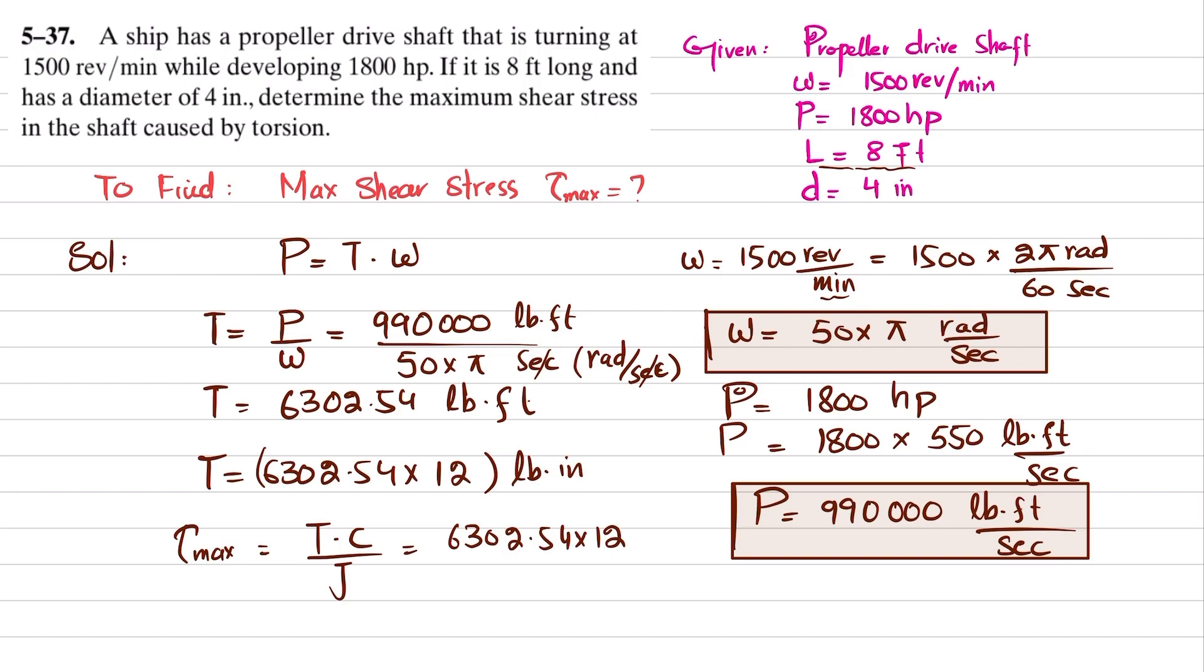C is the radius. Diameter is given as 4, so radius equals 4 divided by 2, which is 2, divided by J. The polar moment of inertia for a solid shaft is π over 2 times c to the power 4, so c is 2.